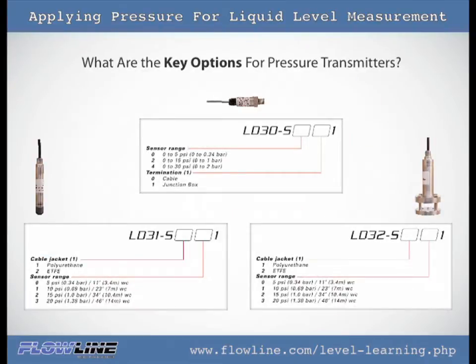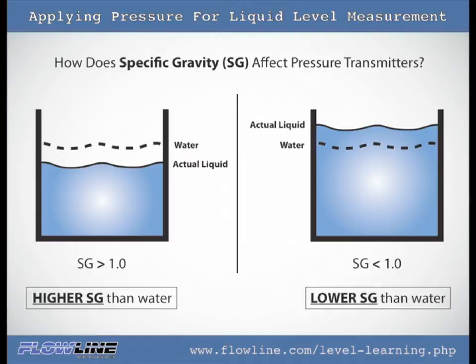The key option for each model is the selection of the pressure range, which determines the operational range for the sensor. Be sure to consider the specific gravity of the liquid when selecting the pressure range. Specific gravity is the ratio of the density of a substance in relation to the density of another substance. Water has a specific gravity of 1; solutions heavier than water have a higher specific gravity, and solutions lighter than water have a lower specific gravity.